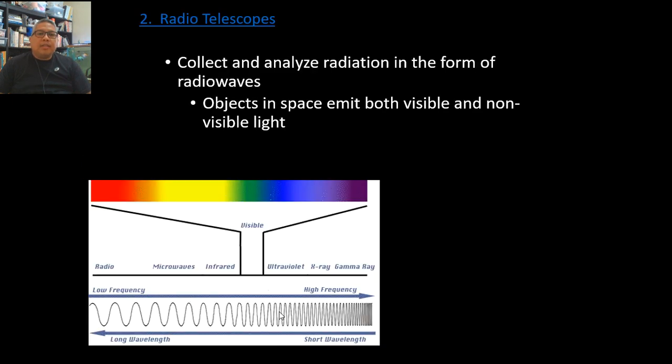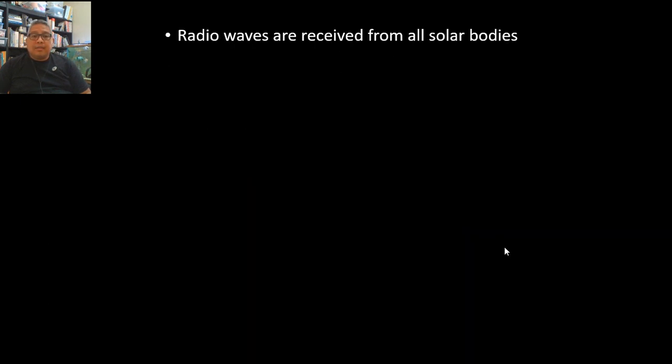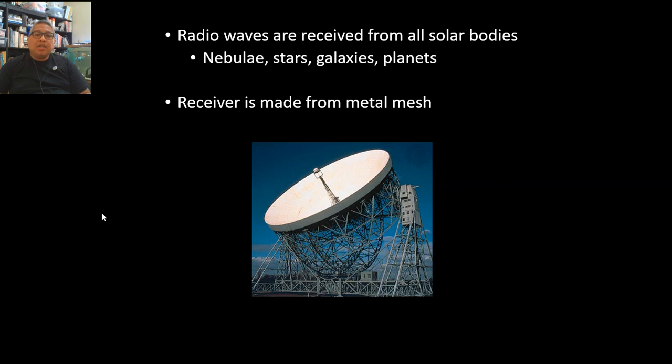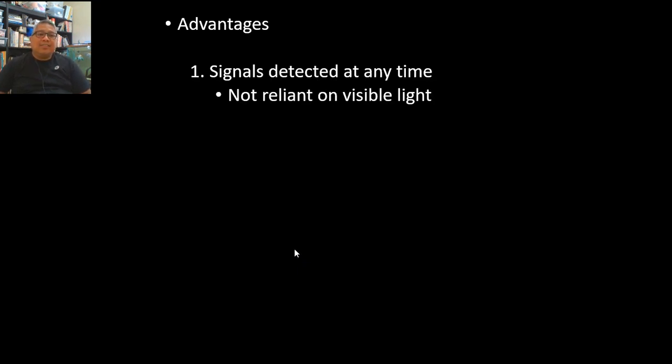Another type of telescope is the radio telescope. This is used for collecting and analyzing radiation in the form of radio waves. Radio waves have longer wavelengths and lower frequency. Objects in space emit both visible and non-visible light. When we see the color of stars, those are visible lights, but there are waves emitted in space like gamma rays, ultraviolet from the sun, some radio waves, and infrared. Radio waves are received from all solar bodies: nebulae, stars, galaxies, and planets. The receiver is made from metal mesh, and they try to analyze the signal coming from those stars.